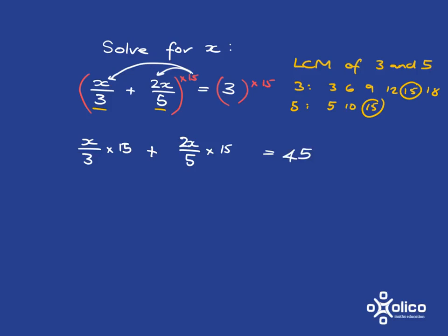Now, when I multiply here by 15, I can see that the 3 cancels with the 15, leaving me with a 5. And here, the 5 cancels with the 15, leaving me with 3. So, what I'll get is 5x plus 6x equals 45, and so 11x is equal to 45. So, x is equal to 45 over 11.